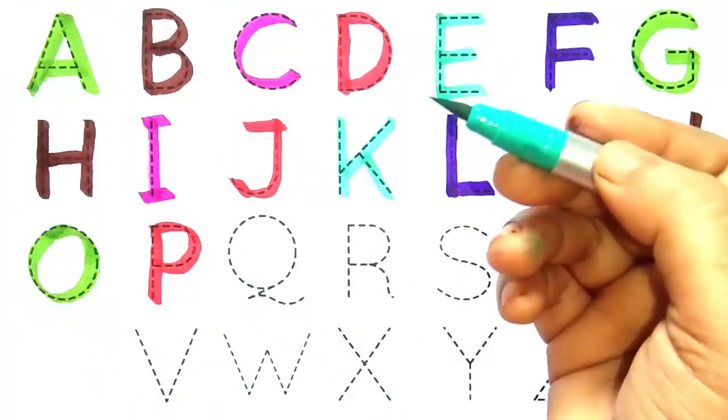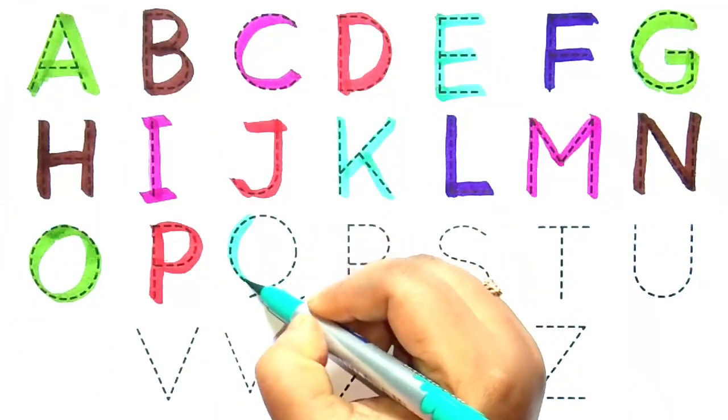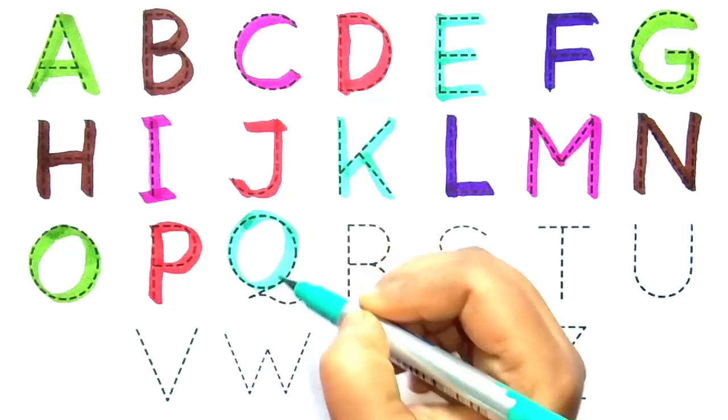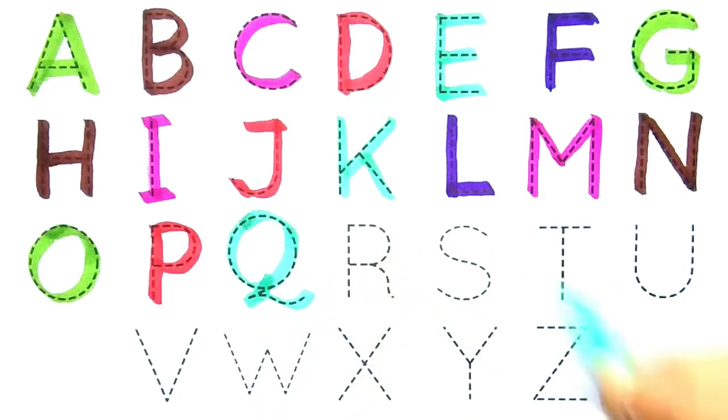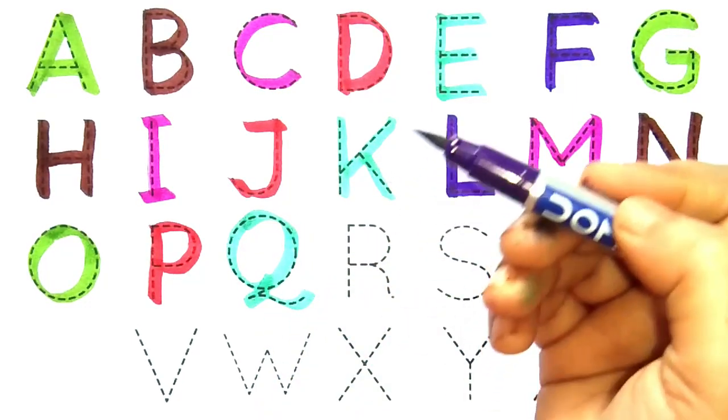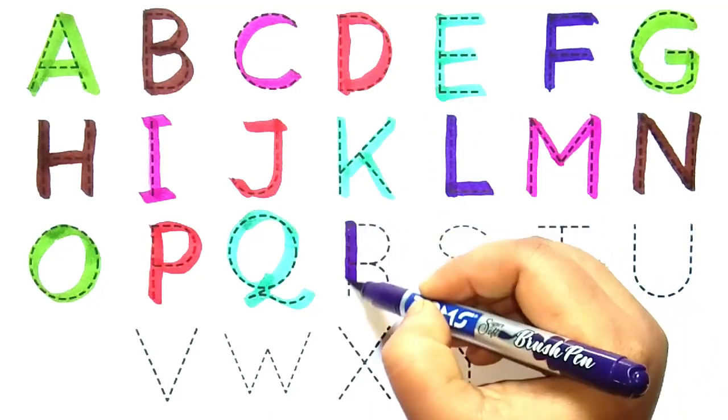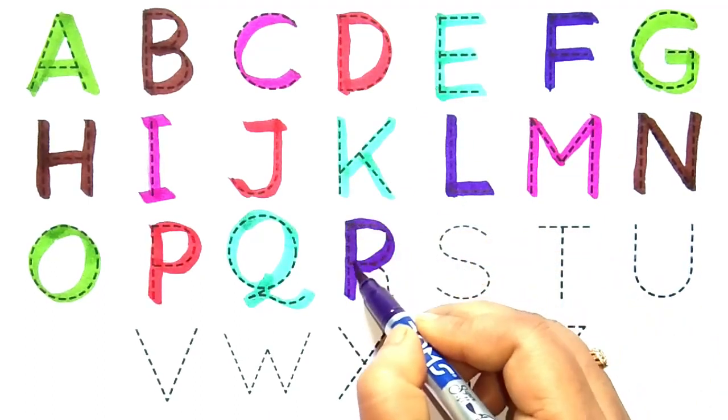Sea green color Q. Q for quill. Purple color R. R for rabbit.